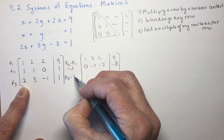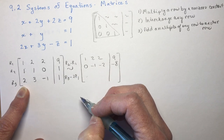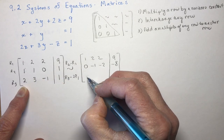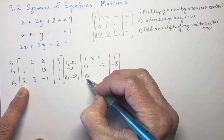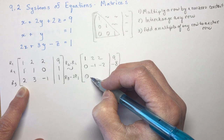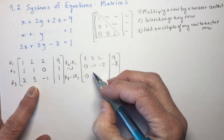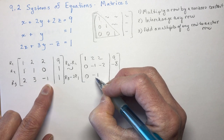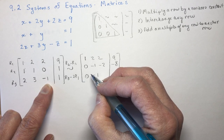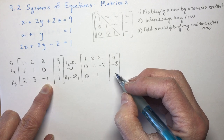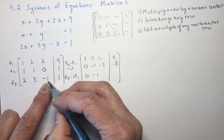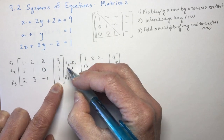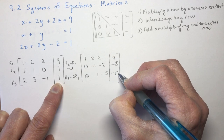For Row 3 minus 2 Row 1: 2 minus 2 is 0, so I've got the zero I needed. Then 3 minus 4 is minus 1, and minus 1 minus 4 is minus 5, and 1 minus 18 is minus 17. So now I have zeros in both positions of column 1 below the leading entry.